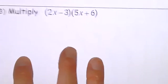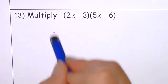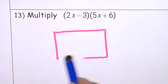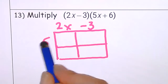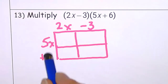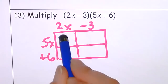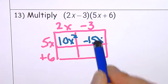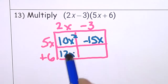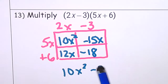On number thirteen, I'll use an area model just like the earlier binomial problem. With (2x minus 3) times (5x plus 6): 2x times 5x is 10x squared; 2x times 6 is 12x; negative 3 times 5x is negative 15x; negative 3 times 6 is negative 18. Combining like terms gives 10x squared minus 3x minus 18.